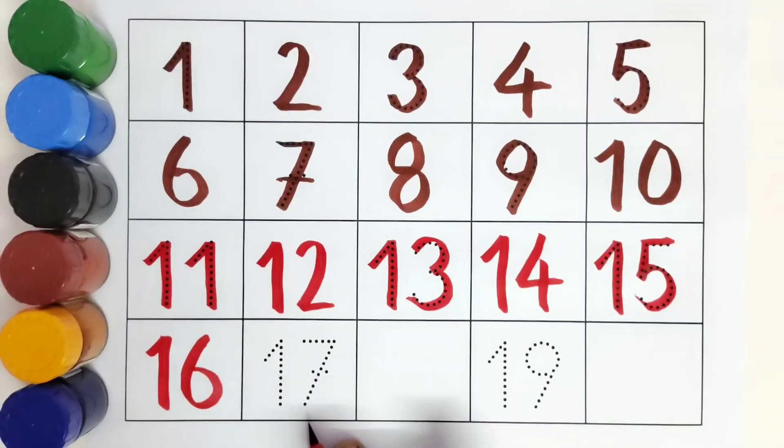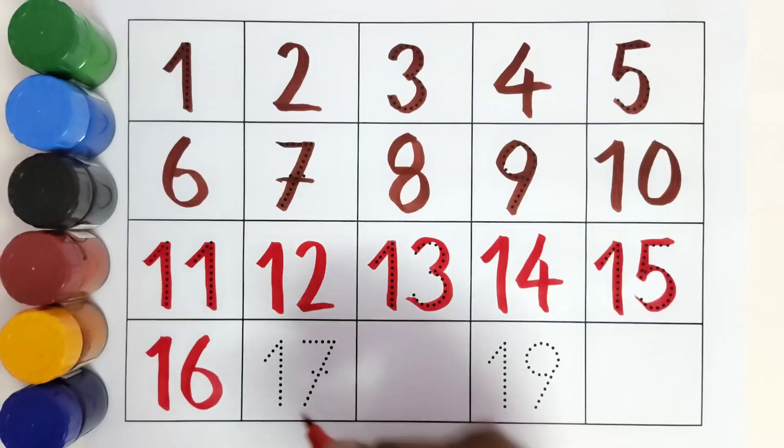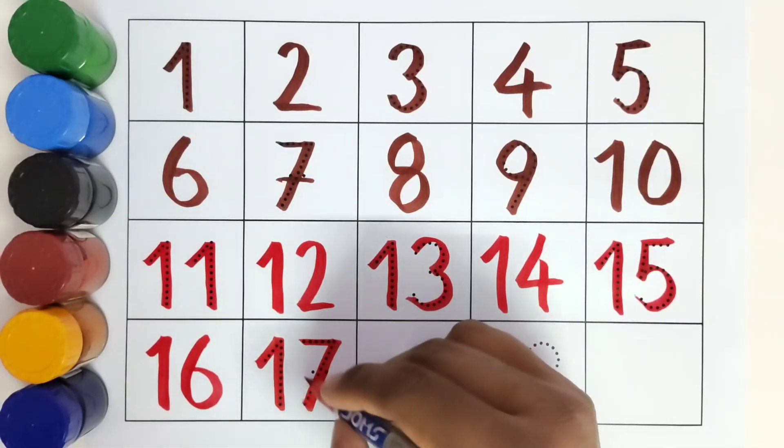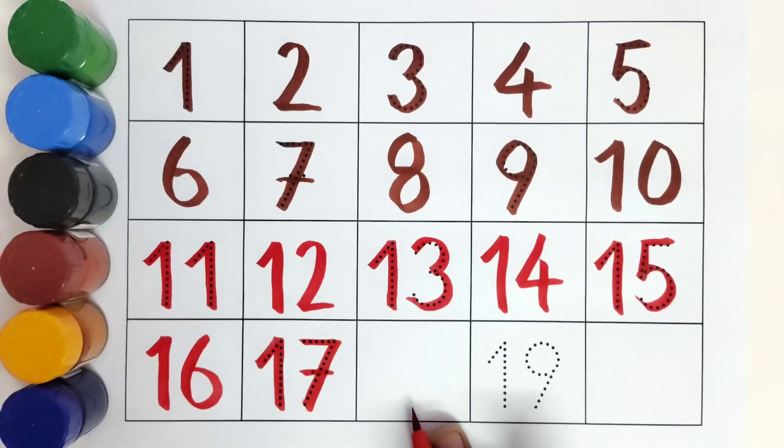One. Seven. Seventeen. What comes after seventeen? Eighteen.